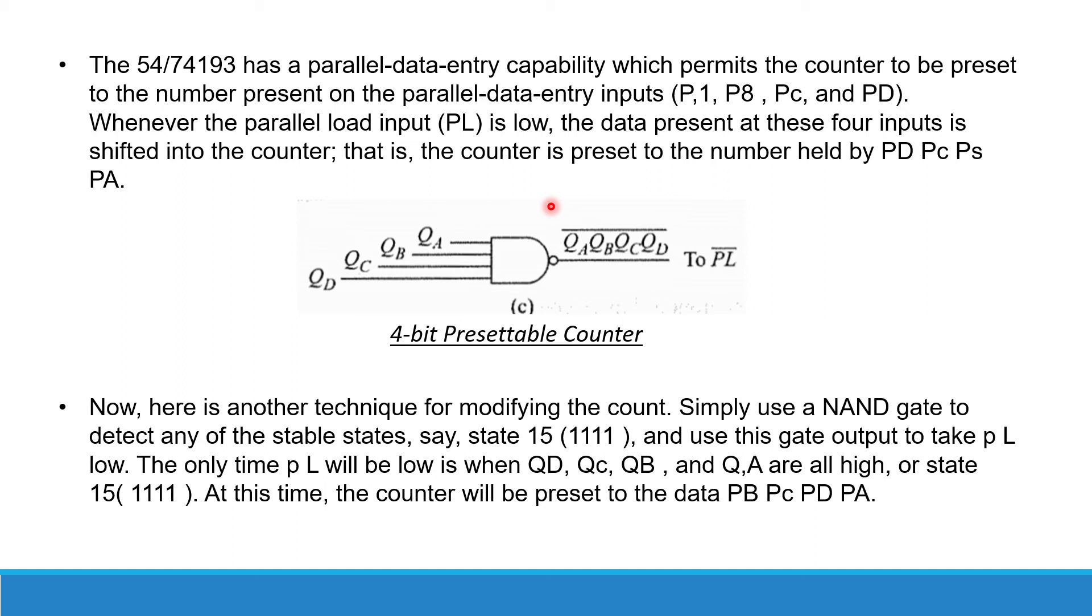The only time PL will be low is when QD, QC, QB, and QA are all high, or state 15. At this time, the counter will be preset to the data PB, PC, PD, and PA.